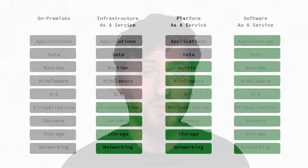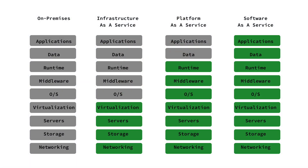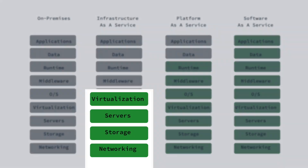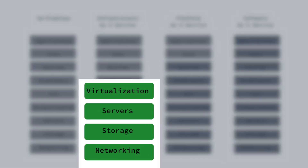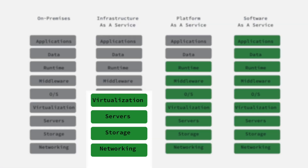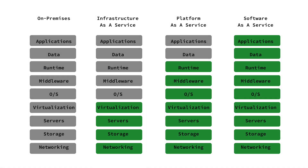This is the most basic category of cloud computing services. With Infrastructure as a Service, you rent IT infrastructure — servers and virtual machines, storage, networking, operating systems — from a cloud provider on a pay-as-you-go basis.